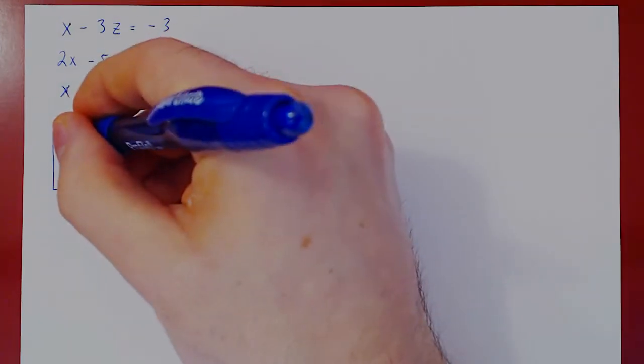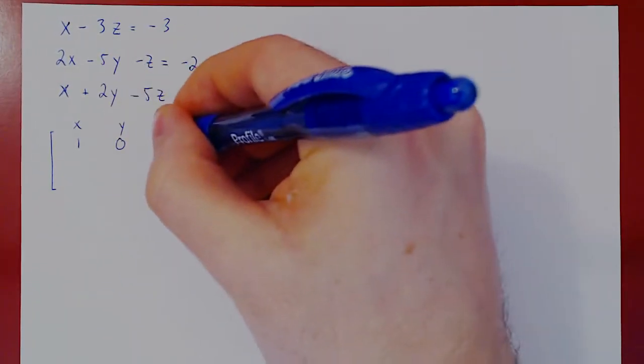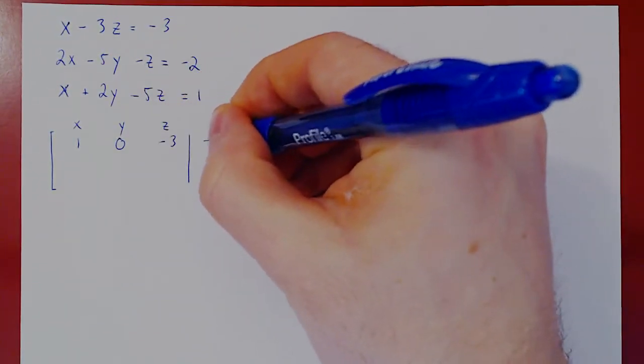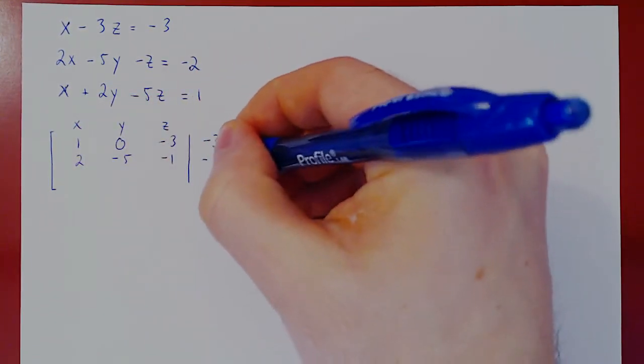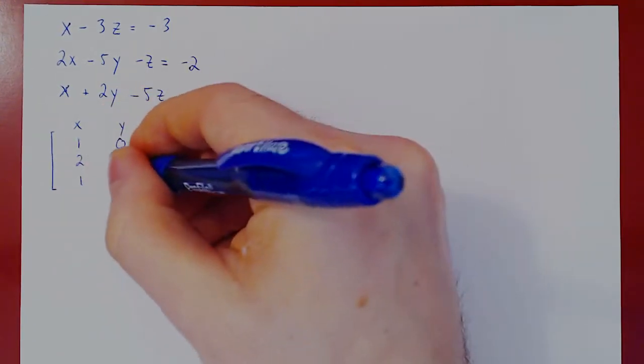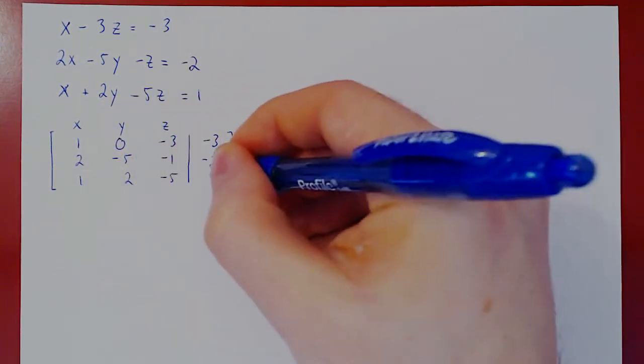And so the first row becomes 1, 0, negative 3, negative 3. Second row: 2, negative 5, negative 1, negative 2. And the third row: 1, 2, negative 5, 1.